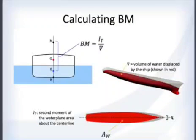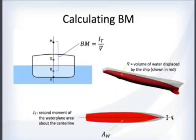BM is calculated as the transverse moment of inertia of the waterplane divided by the underwater volume — these are the characteristics from the geometry of ships. Your hydrostatics program provides these numbers and also calculates BM for you.